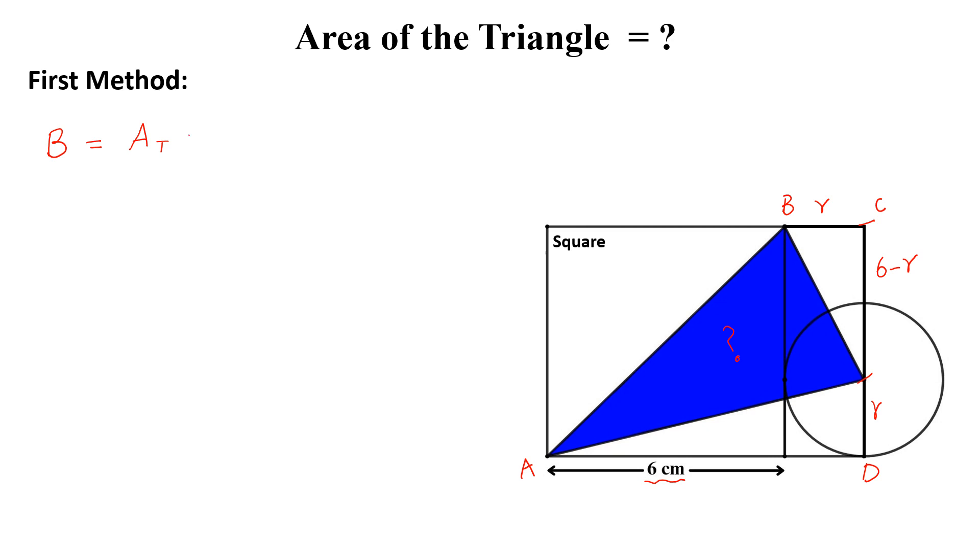Area of this trapezium minus area of this triangle, A1 and area of this triangle, A2, so A1 plus A2.